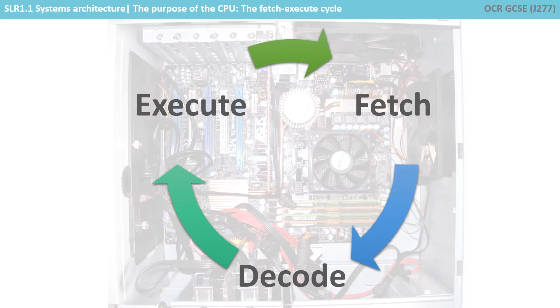A computer carries out its function by fetching instructions, decoding them, and then executing them in a continuous and repetitive cycle, billions of times a second. Let's look at each of these stages in a little more detail.